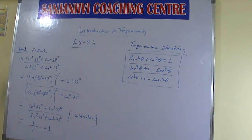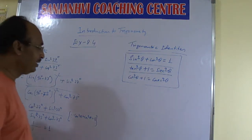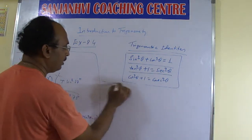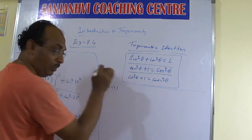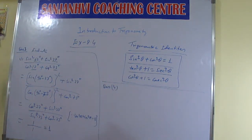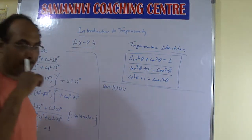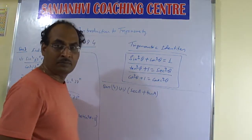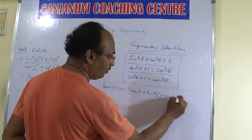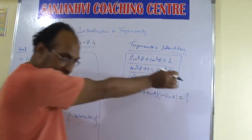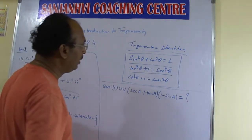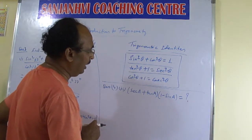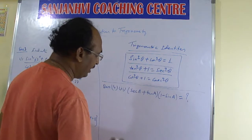Now which question do you want? Fourth one. Question number 4, subdivision 3. Very good. What is there? Bracket: sec a plus tan a, bracket, into one minus sin a. We need to find the value. Let us see what we can do. So sec a plus tan a, and one minus sin a.